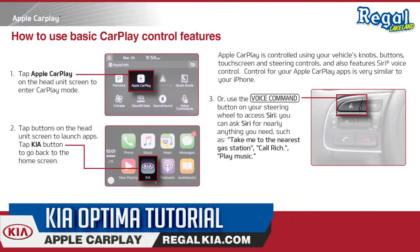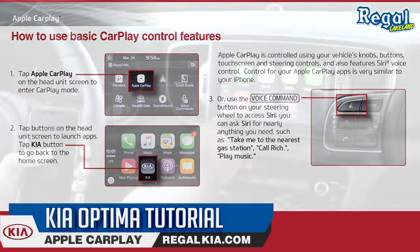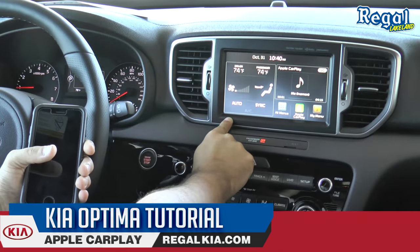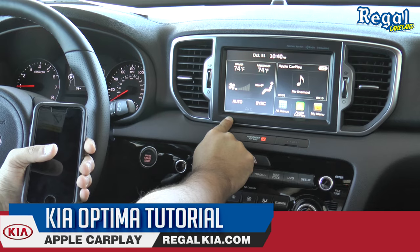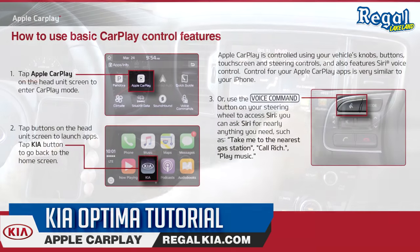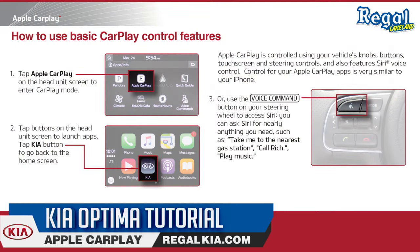How to use basic CarPlay control features. Tap Apple CarPlay on the head unit screen to enter CarPlay mode. Then tap buttons on your head unit screen to launch apps, then tap the Kia button to go back to the home screen. Or you can use the voice command button on your steering wheel to access Siri. You can ask Siri for nearly anything you need, such as 'Take me to the nearest gas station,' 'Call Rich,' or 'Play music.'